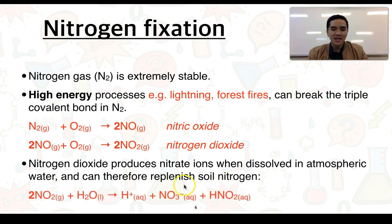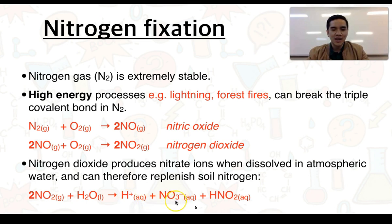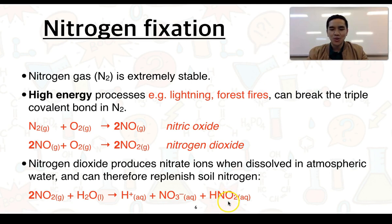The key reaction we look at is NO₂ reacting with water to produce protons plus nitrate ions, which we can think of as producing nitric acid (HNO₃) in solution, as well as nitrous acid, which is a weaker acid — showing that the proton hasn't fully dissociated from the NO₂.